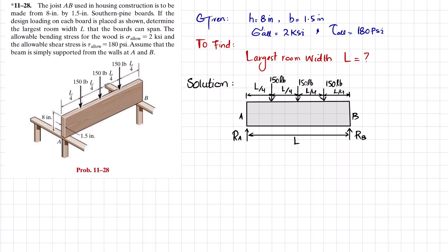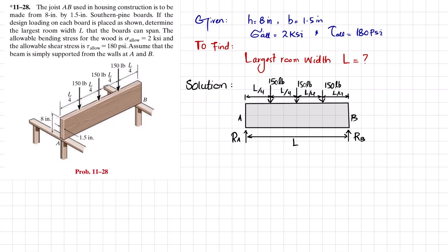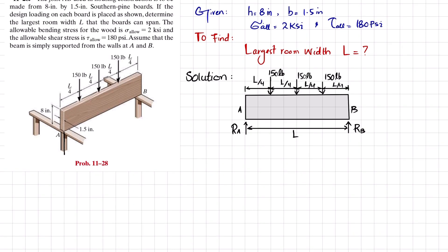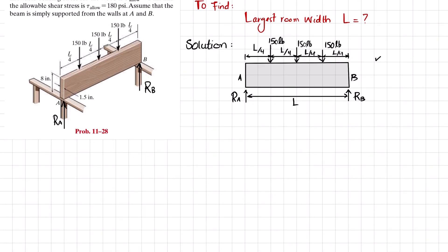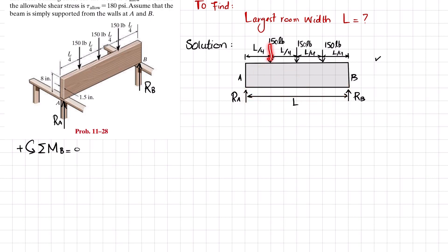Let's start with the solution. If you remove the supports at points A and B, you will have reaction forces Ra at A and Rb at B. I have drawn the free body diagram here. We will find Ra and Rb using the equilibrium condition: the sum of all moments about point B equals zero, taking counterclockwise as positive. About point B, the first moment is Ra times perpendicular distance L, producing clockwise, so it is negative.